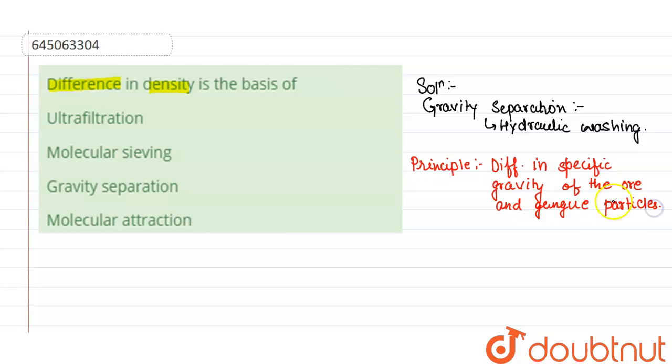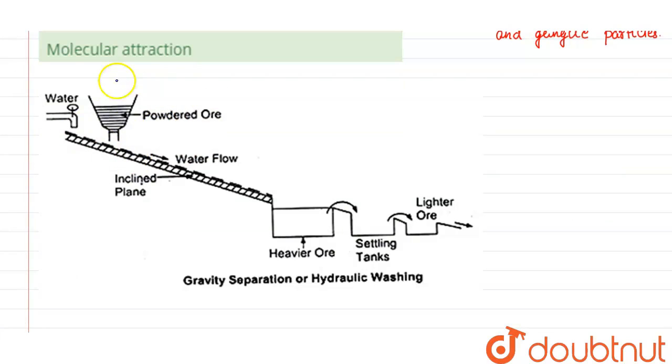So let's see what happens here. This is the technique. Powdered ore is taken here and it is rushed over this inclined vibrator machine. Water is flowing through this pipe as well. Now what happens is the difference in density.